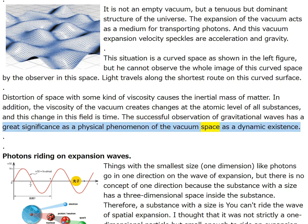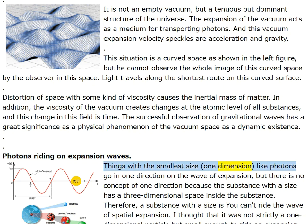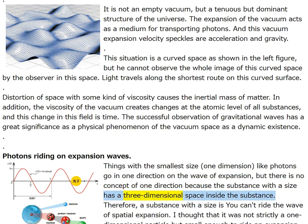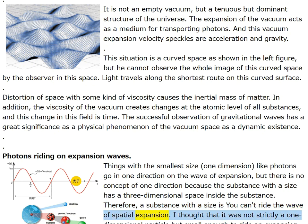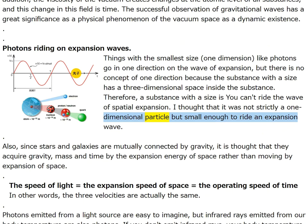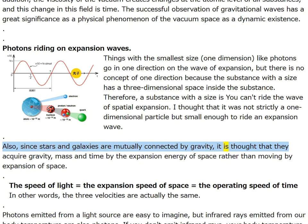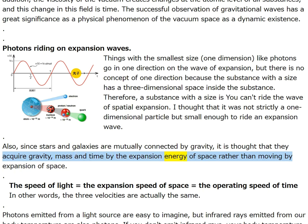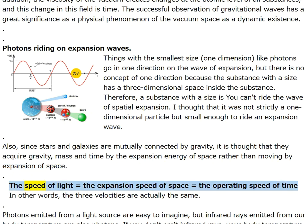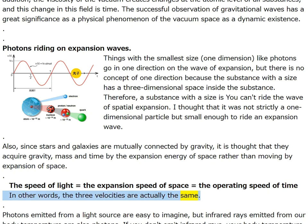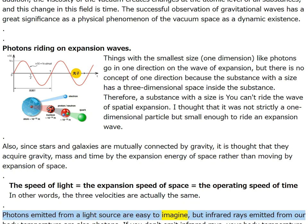The successful observation of gravitational waves has great significance as a physical phenomenon of the vacuum space as a dynamic existence. Photons — things with the smallest size (one dimension) — go in one direction on the expansion wave, but a substance with a size has a three-dimensional space inside and cannot ride the wave of spatial expansion. Also, since stars and galaxies are mutually connected by gravity, they acquire gravity, mass, and time by the expansion energy of space rather than moving by expansion of space. The speed of light = the expansion speed of space = the operating speed of time — the three velocities are actually the same.